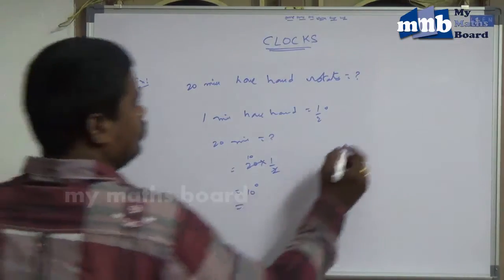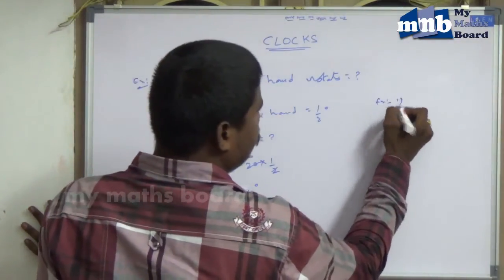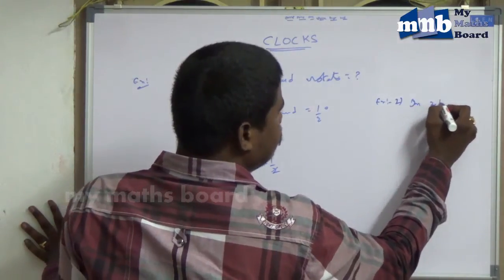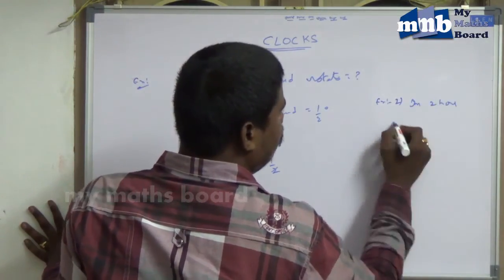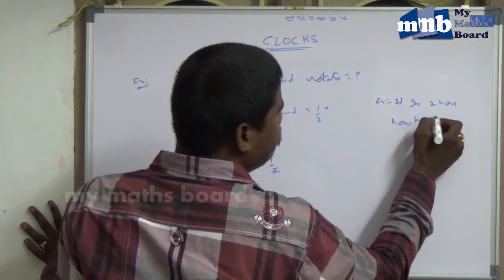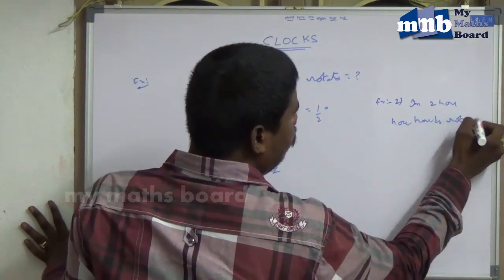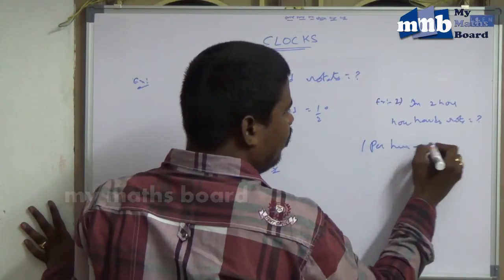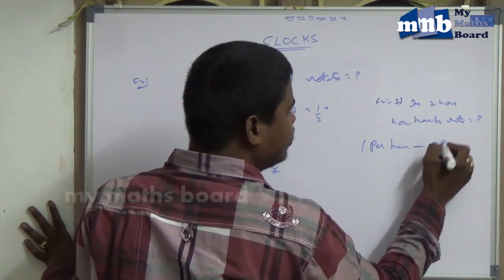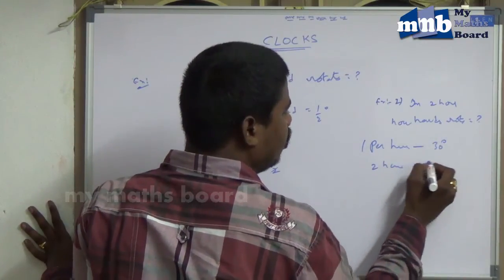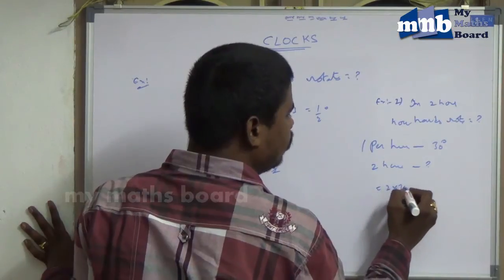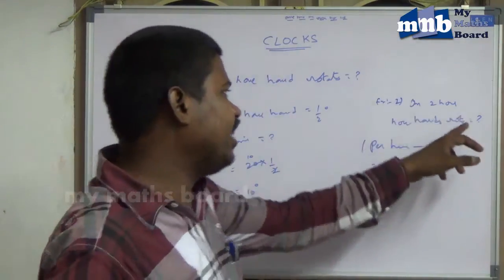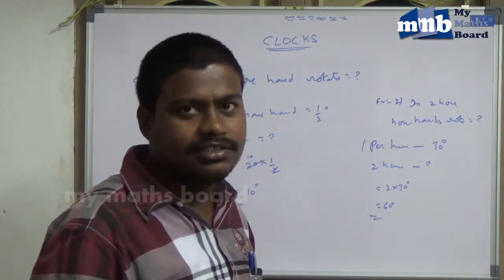Second example: in two hours, how much does the hour hand rotate? In one hour, the hour hand rotates 30 degrees. So for two hours, that is 2 multiplied by 30 degrees, which equals 60 degrees. So in two hours, the hour hand rotates 60 degrees.